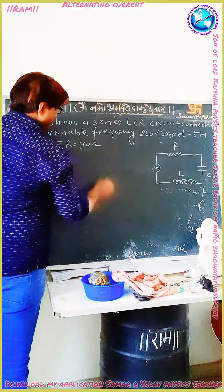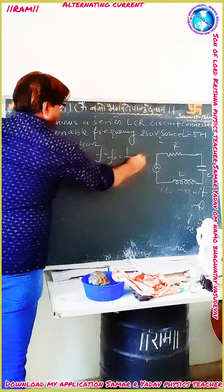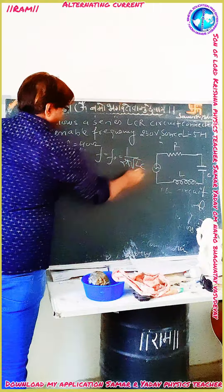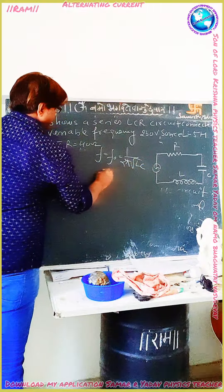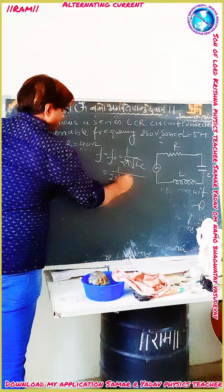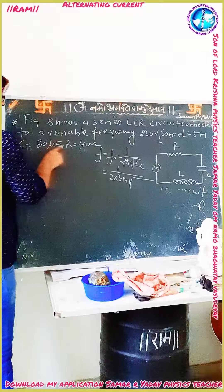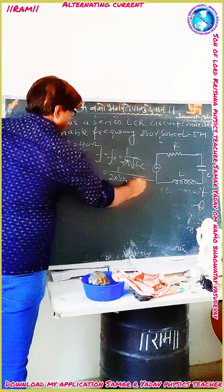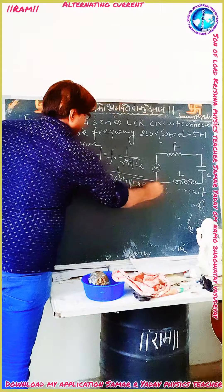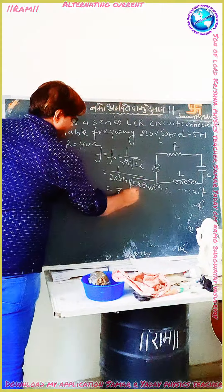Now we know that the resonating frequency F₀ is equal to 1 upon 2π under root LC, which is equal to 1 upon 2π × 3.14, under root of L = 500 mH and C = 80 micro farad (×10⁻⁶). Solving this, you will get 7.962 Hz.